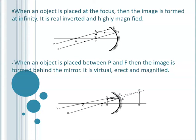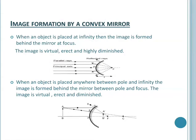Fifth position: when the object is placed at the focus F, the image is formed at infinity, and the nature of the image is real, inverted, and highly magnified. In these five cases, the nature of the image is always real and inverted. Sixth position: when an object is placed between pole P and focus F, the image is formed behind the mirror and the nature of the image is virtual, erect, and magnified.